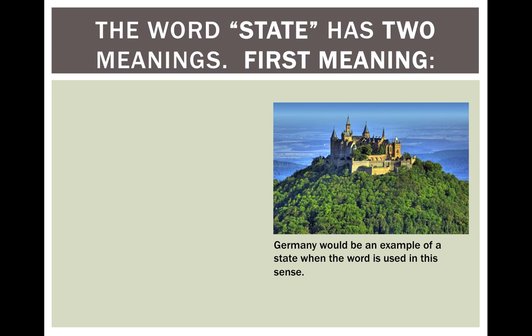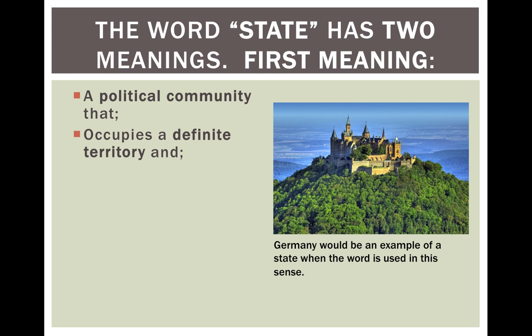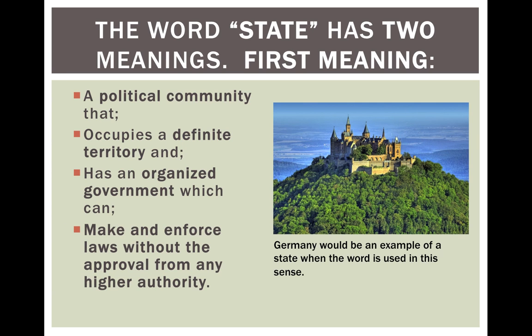The word state has two meanings. Here's the first meaning: a political community that occupies a definite territory and has an organized government which can make and enforce laws without the approval from any higher authority. Germany would be an example of a state when the word is used in this sense.